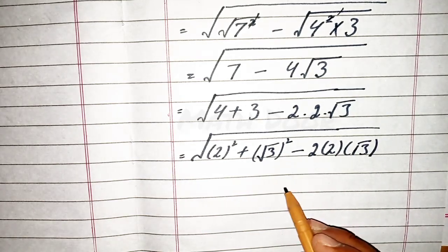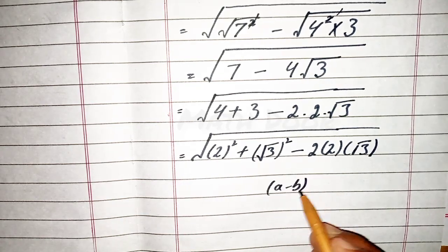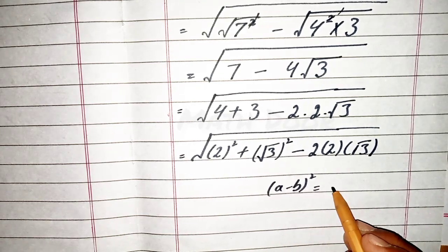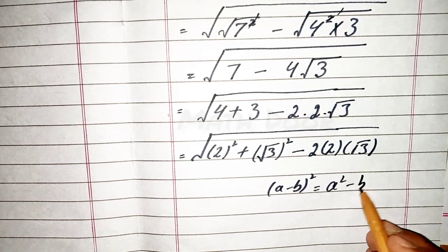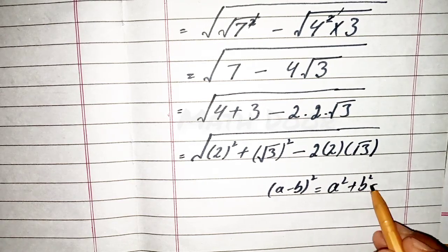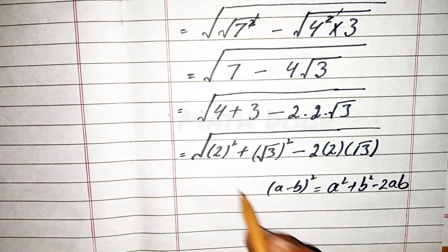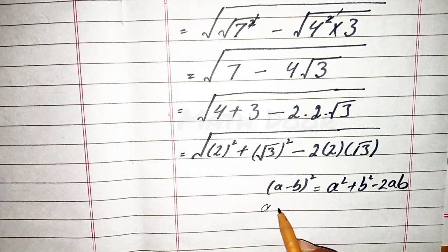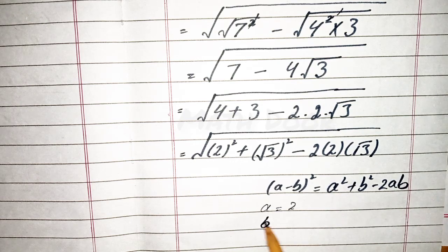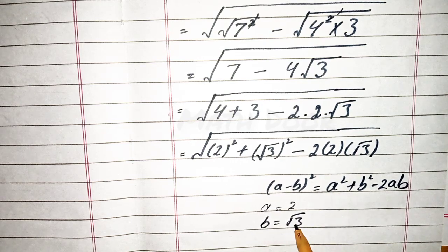We have a formula: a minus b whole square equals a square plus b square minus 2ab. Here, 2 equals a and b equals under root 3.